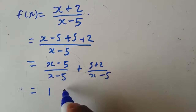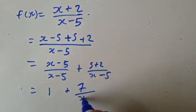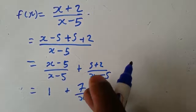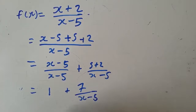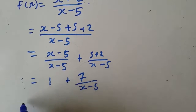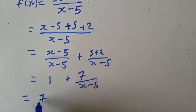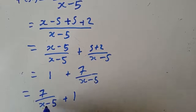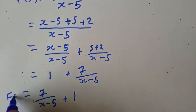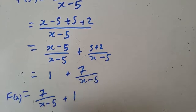Then we split it: (x − 5)/(x − 5) + (5 + 2)/(x − 5). The same thing over the same thing is 1, and 5 + 2 = 7, so we get 7/(x − 5). Rearranging, it becomes 7/(x − 5) + 1. So f(x) = 7/(x − 5) + 1.